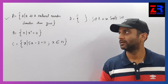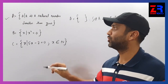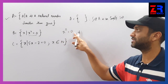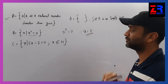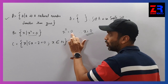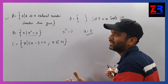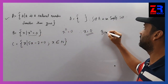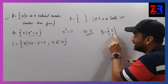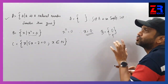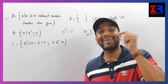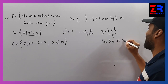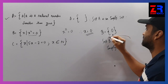Set B: X such that X squared is equal to 0. Solving: X squared equals 0, so X equals 0. The value of X is 0. Set B contains one element which is 0. It contains an element, so it is not an empty set. Set B is not an empty set.